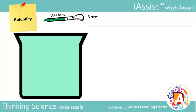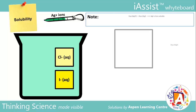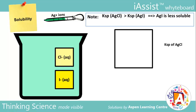The starting concentrations of both I⁻ and Cl⁻ in this solution are 1 mole per dm³. As AgI is less soluble than AgCl, the Ksp of AgCl is greater than that of AgI, as represented by the size of these boxes.